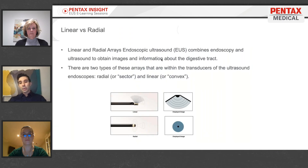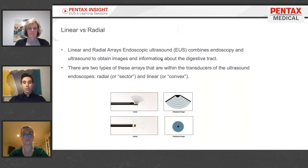The two types of endoscopic ultrasound scopes are linear and radial — those are the terms we use to describe our two scopes, and they relate to how they image. The radial scope in most instances is a forward-viewing endoscope, so endoscopically it looks exactly like a gastroscope — when you're driving forward, you can see exactly where you're going. The radial scope images in a 360-degree form around the axis of the endoscope.